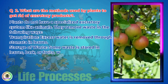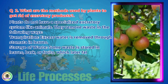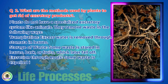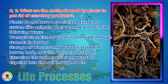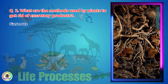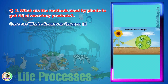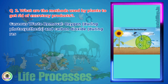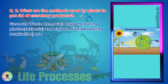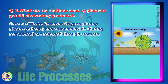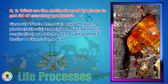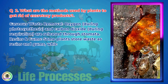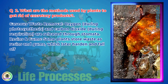Excretion through roots — some waste is expelled into the soil through roots. Gaseous waste removal — oxygen during photosynthesis and carbon dioxide during respiration are released through stomata. Resins and gums — some plants store waste as resins and gums, which later harden and fall off.